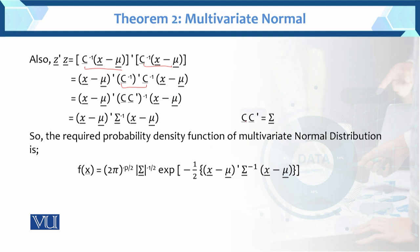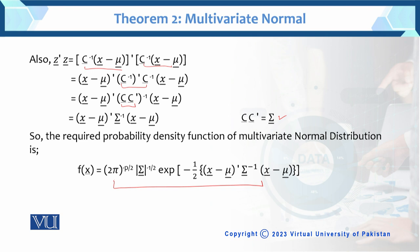We know that c times c prime, i.e., c transpose, equals the variance-covariance matrix sigma. As given previously, this factor equals sigma. So the inverse of sigma's value — substituting c times c transpose — gives us the required probability density function of the multivariate normal distribution. Thus f(x) is exactly the pdf of the multivariate normal distribution. This confirms that the transformed variable also follows the multivariate normal distribution if the original variable follows the multivariate normal distribution.